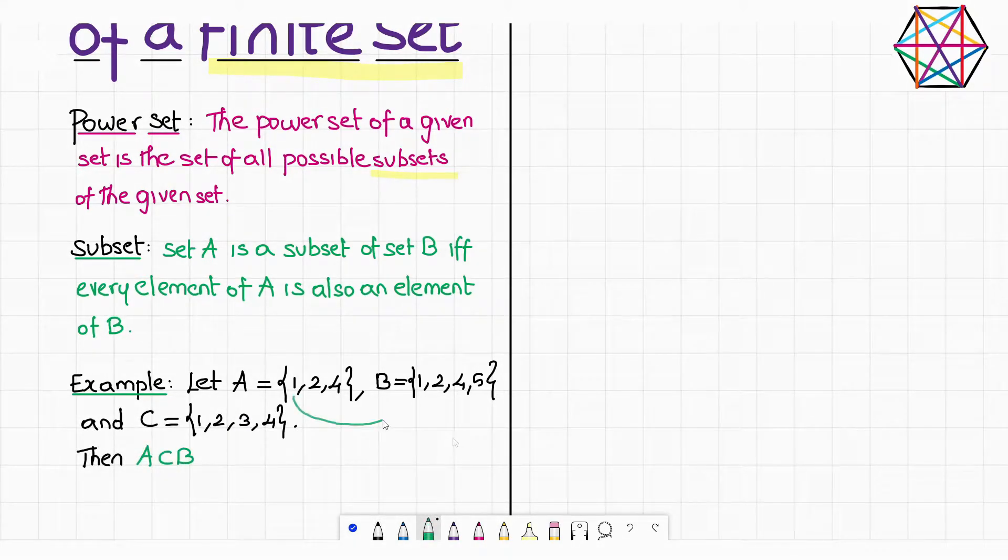Then A is a subset of B, because every element of A is also an element of B. B is not a subset of C. Because element 5 is in B, but it's not a part of set C. And again, A is a subset of C for the same obvious reasons. You are getting this idea, right?